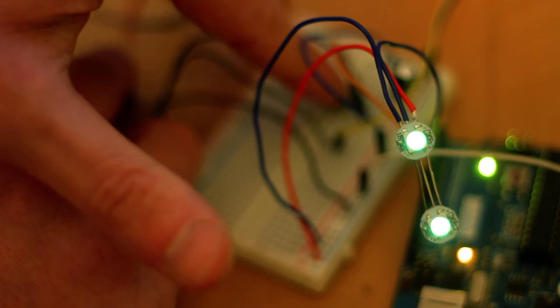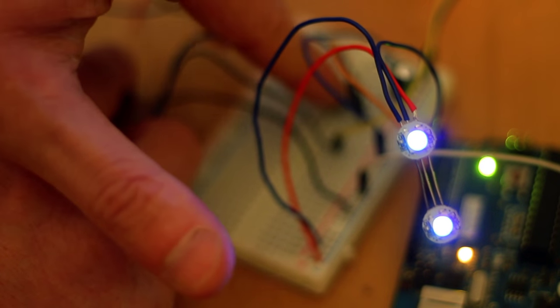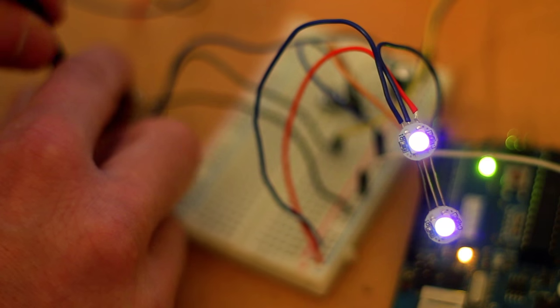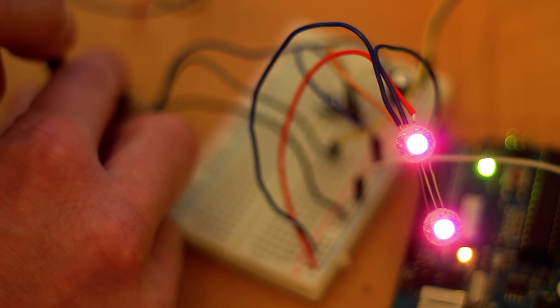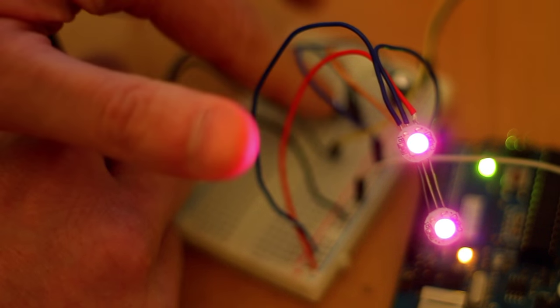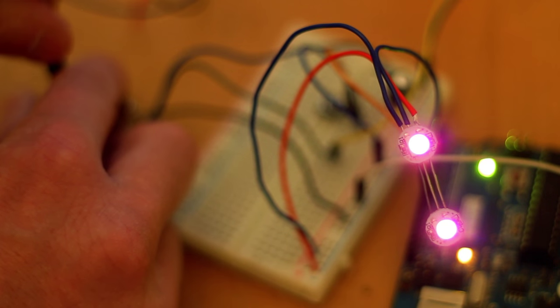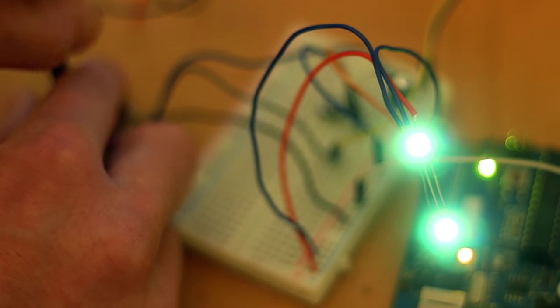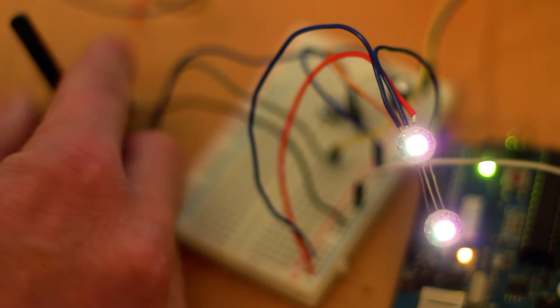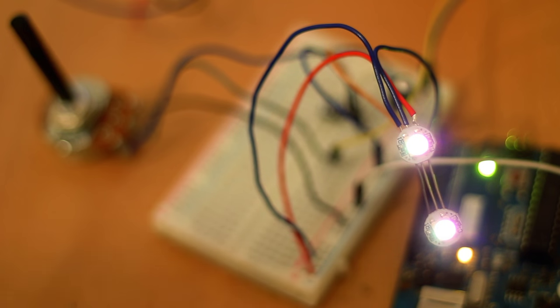So again we've got the same code running on both of these so we can change the colors and alter them as we like really. So we get a nice violet color there when we change them like that. They're really easy to use so we can control it individually.